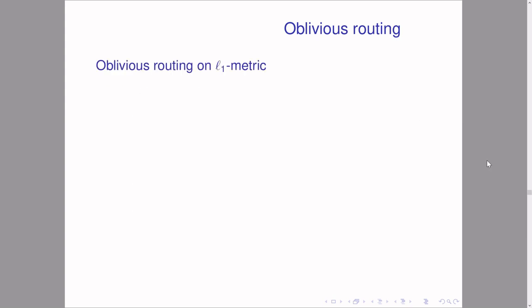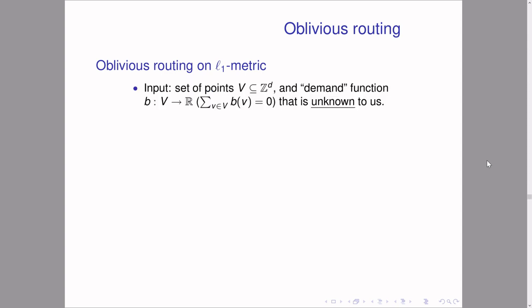Now we define L1 oblivious routing on an L1 metric more formally. The input is a set of points with a demand function whose demands sum to zero — the demand function is unknown to the algorithm but known to us for analysis. On each step, the algorithm chooses any two points and a scalar, where these choices are made without knowing the current demands.